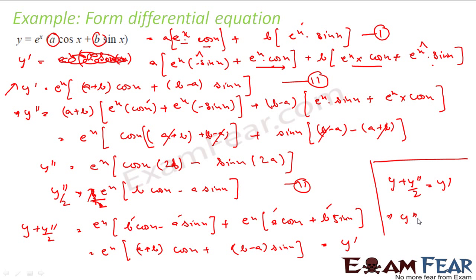Rearranging, this gives y double dash − 2·y dash + 2y = 0. Nothing extraordinary about this question — we found y, y dash, y double dash, giving three equations. We arranged them to eliminate a and b. Finding a and b directly would have been harder since the terms involve a + b form, so using observation to combine equations was the cleaner approach.